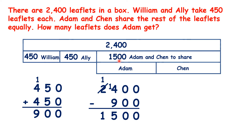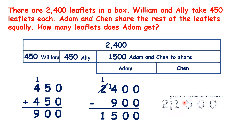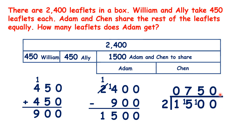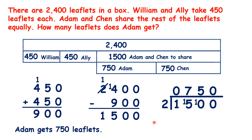So there are 1,500 leaflets for Adam and Chen to share. But the question asks how many leaflets Adam gets — not how many Adam and Chen get together. So because they share the rest of the leaflets equally, we need to divide the number of leaflets by 2. That means Adam and Chen each get 750, so Adam gets 750 leaflets.